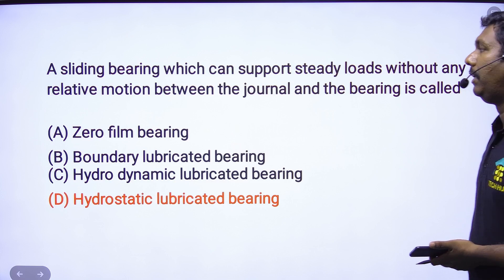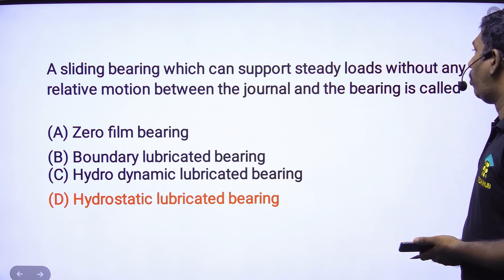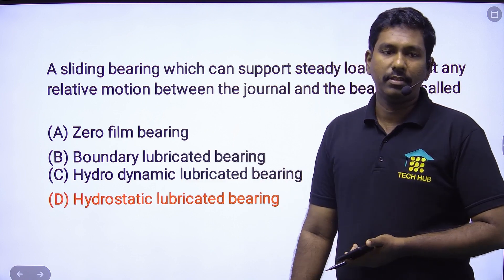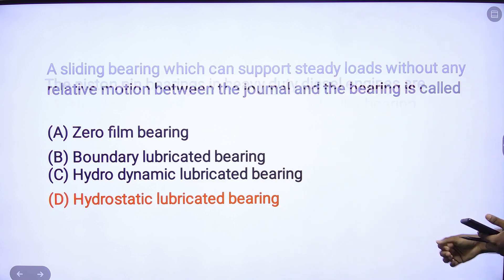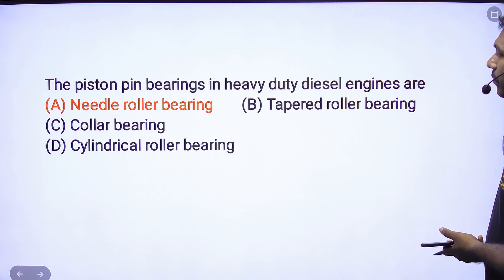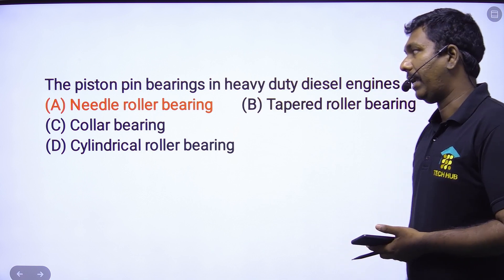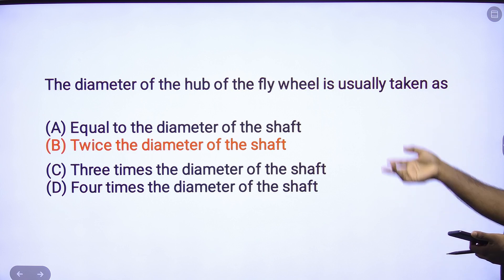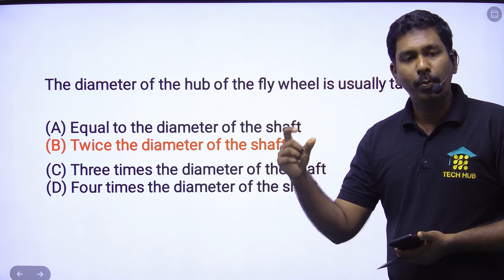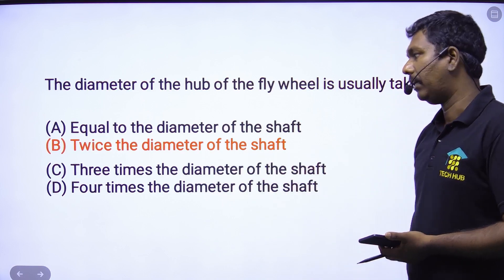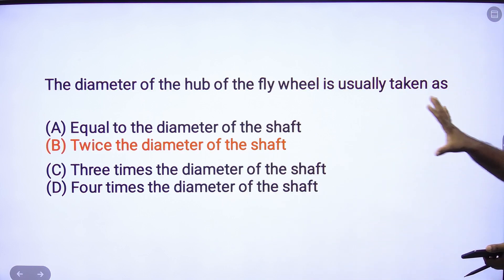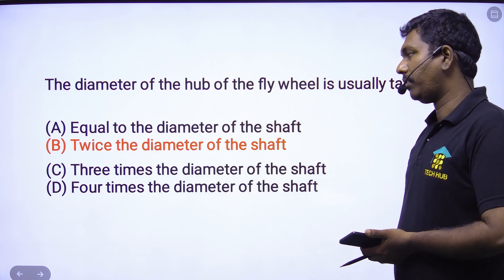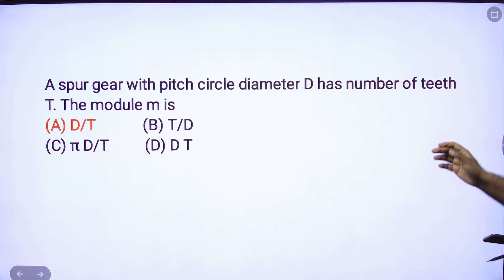A sliding bearing which can support steady load without any relative motion between journal and bearing is a hydrostatic lubricated bearing — option D is the correct answer. The piston pin bearing in heavy-duty diesel engines are needle rolling bearings — option A. The diameter of the hub of a flywheel is usually taken as 2 to 2.5 times the diameter of the shaft — option B.